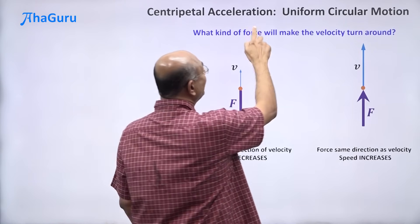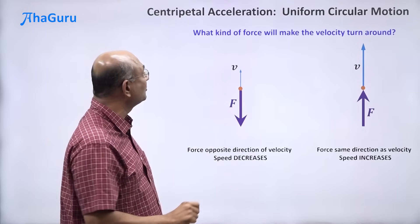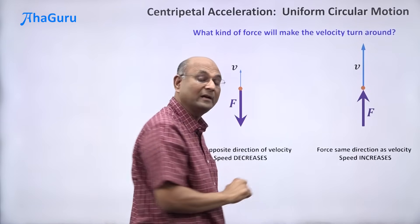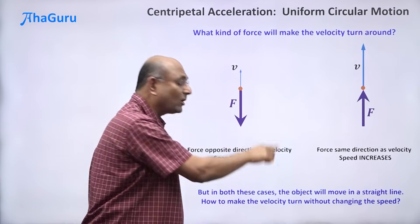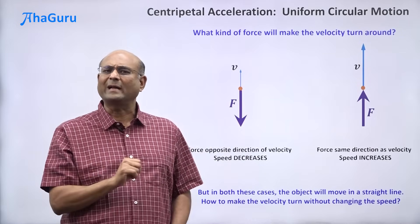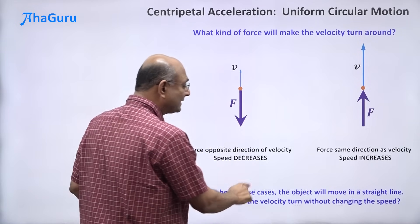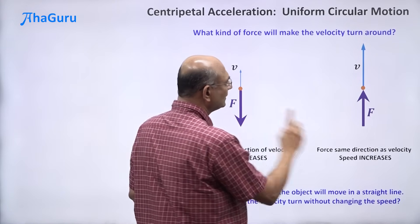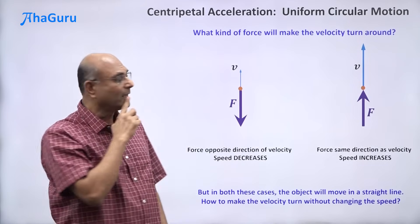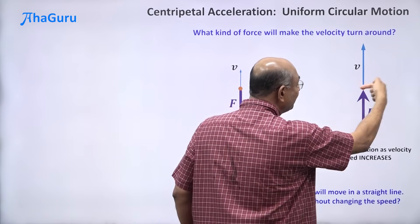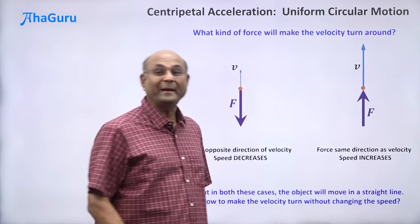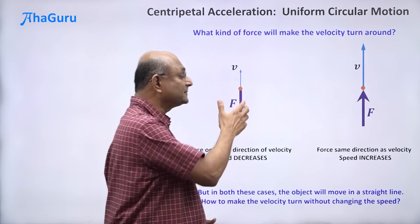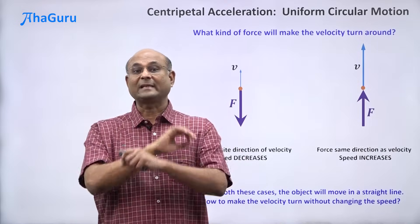We are looking at an object moving in uniform circular motion, which means the speed should not change, but the velocity must be turning around. In both of the previous cases, the object moves in a straight line — I don't want that. I want to make the velocity turn without changing the speed. So what will happen if I exert a force perpendicular to the velocity? Will that make the object move in a circle? Let us explore that.